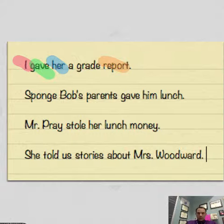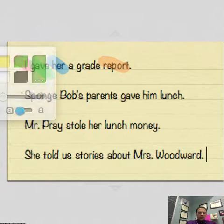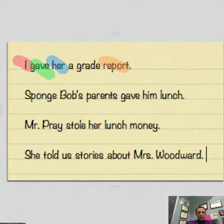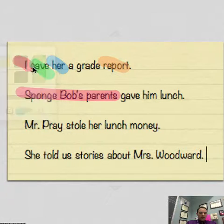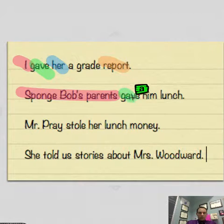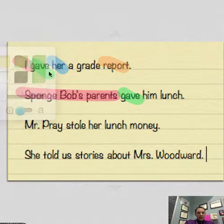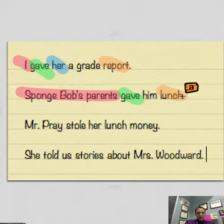SpongeBob's parents gave him lunch. Okay, in this case pick my color for the subject. It's really easy to see that we've got SpongeBob's parents being the subject of this. What did they do? They gave. So let's get my color out here for my verb. So gave. And what did they give? They gave lunch. So that's going to be the direct object.